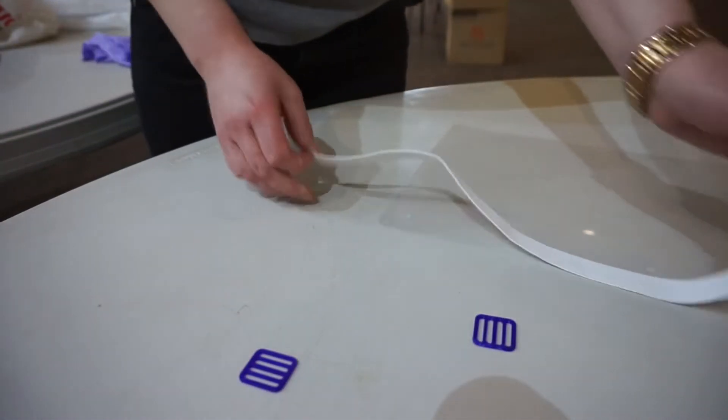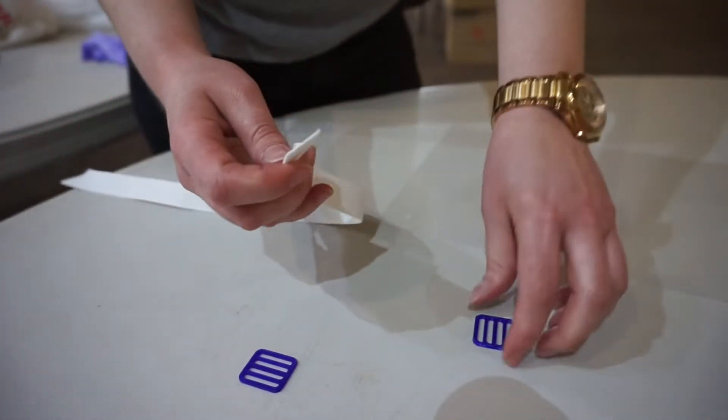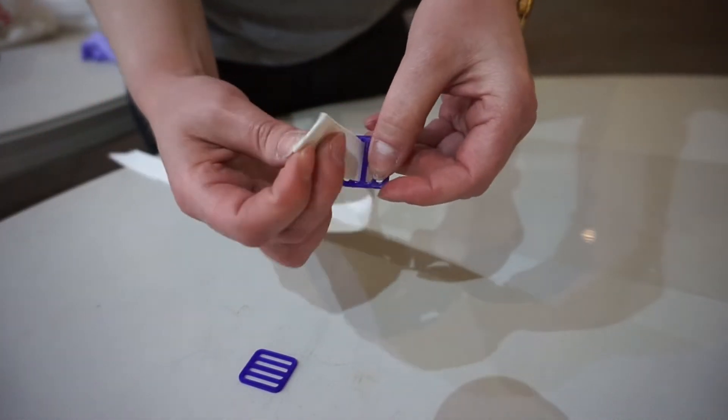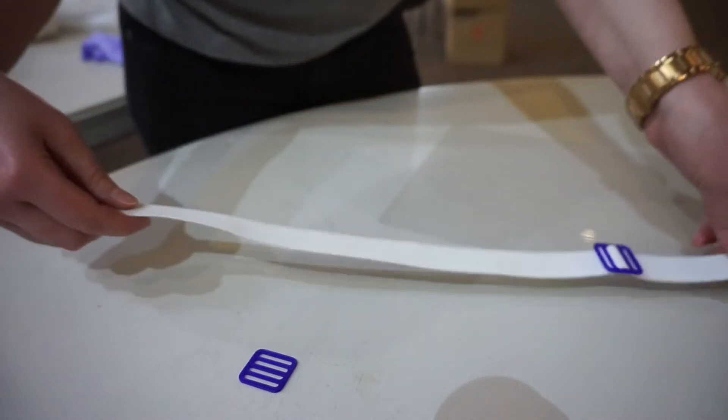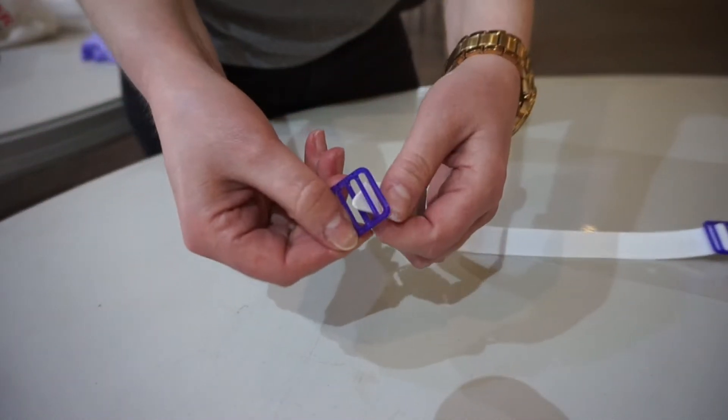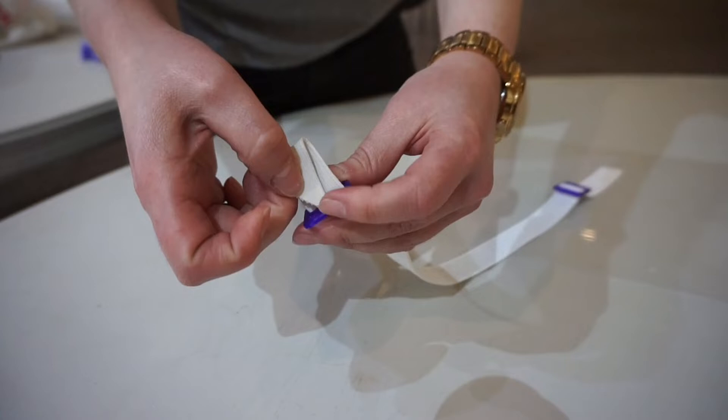Take your piece of elastic and the strap locks. It will go first through the inner two holes. Cutting the elastic at an angle can help with assembly. Do this on both sides.